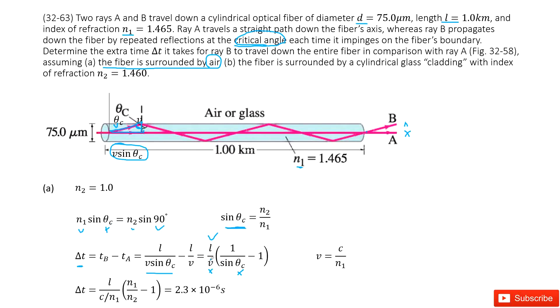For V, the speed in this fiber is the speed of light in vacuum divided by the index, so V equals c divided by N1. Substituting V and sine theta_c into our equation and inputting all given quantities, we get the answer.